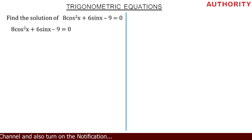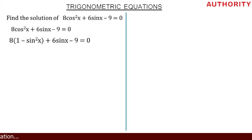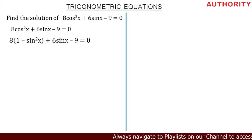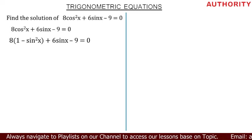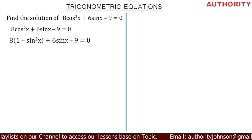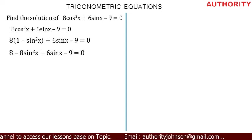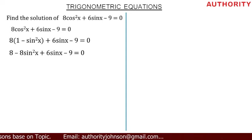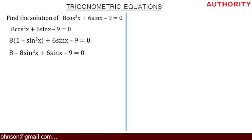We can replace cos²x with 1 − sin²x. So instead of cos²x, we put (1 − sin²x). It will look like: 8(1 − sin²x) + 6sinx − 9. Now let's open the bracket: 8 times 1 gives 8, and 8 times −sin²x gives −8sin²x. So we have 8 − 8sin²x + 6sinx − 9 = 0.